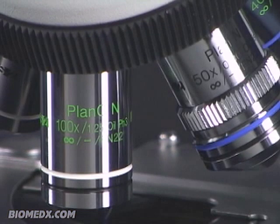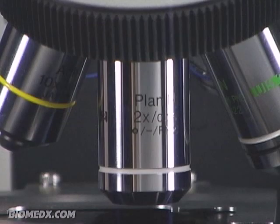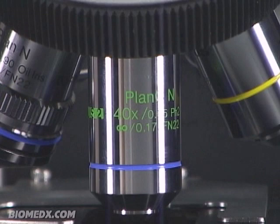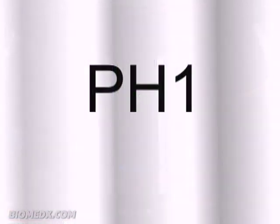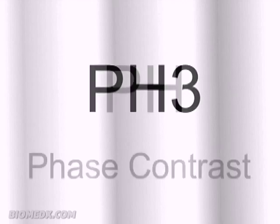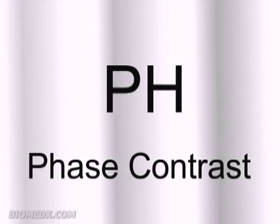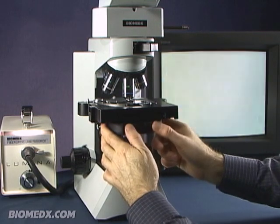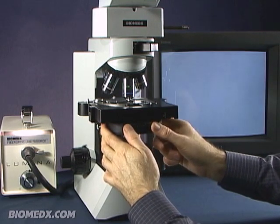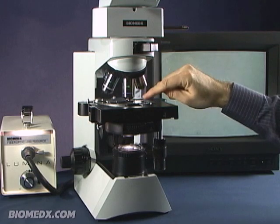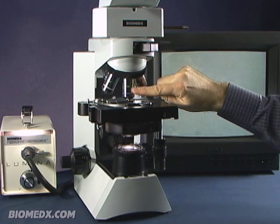When you look at the barrel of a microscope objective, you will see the magnification or x-factor printed along with some other notations. You might see the designation of pH 1, pH 2, or pH 3. This would mean that it is a phase contrast objective and you would need to rotate your turret condenser to the appropriate pH number, which matches the pH number on the objective, in order to get a proper focus and phase alignment.